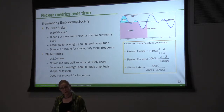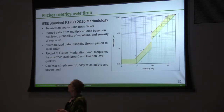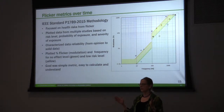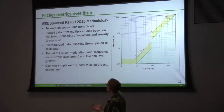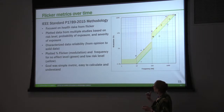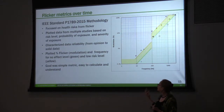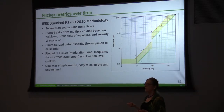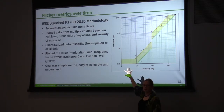However, flicker index also does not account for frequency. The IEEE standard published in 2015 was a first attempt at coming up with guidelines for avoiding the health consequences of flicker. They took data from a variety of studies and plotted percent flicker versus frequency based on risk level, probability of exposure, and severity. They showed a level for low risk and for no effect level — NOEL. The goal was to have a very simple, easy-to-calculate metric.